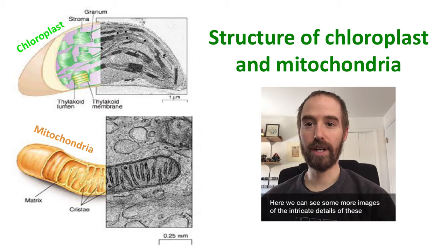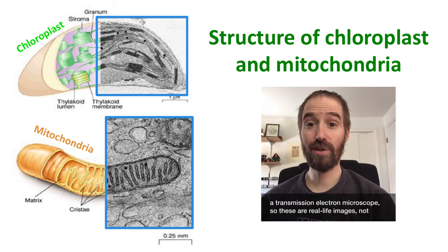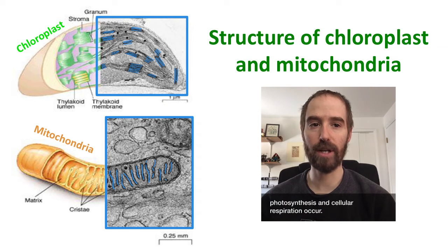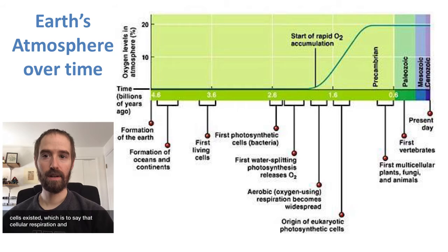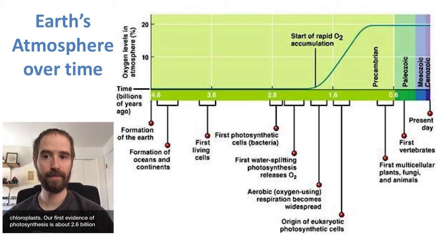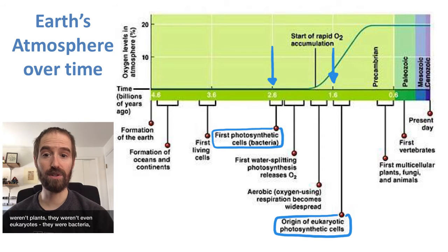Here we can see more images of the intricate details of these fascinating organelles. These black and white images were captured with a transmission electron microscope, so these are real-life images, not illustrations. In them, we can see the folded inner membranes where photosynthesis and cellular respiration occur. But our best evidence suggests that these processes existed on our planet well before the first eukaryotic cells existed — meaning cellular respiration and photosynthesis occurred long before there were actually mitochondria and chloroplasts. Our first evidence of photosynthesis is about 2.6 billion years ago, but we don't see that happening in a chloroplast until about a billion years later. Which means that the first photosynthetic life forms weren't plants — they weren't even eukaryotes. They were bacteria: prokaryotic organisms without membrane-bound organelles.